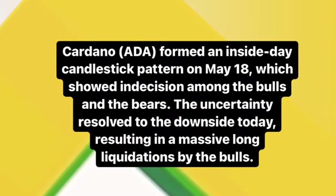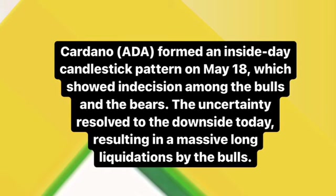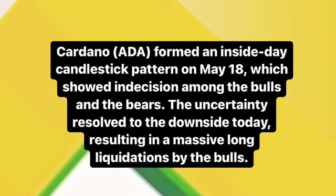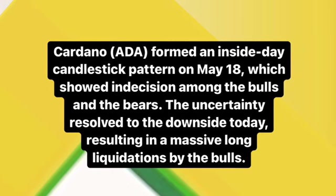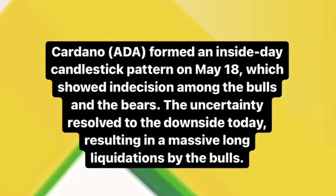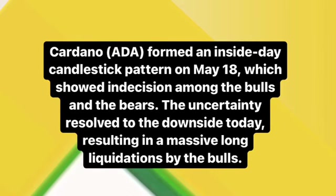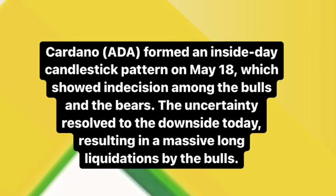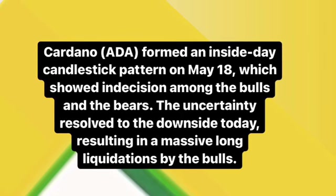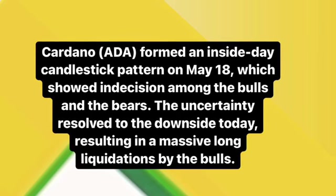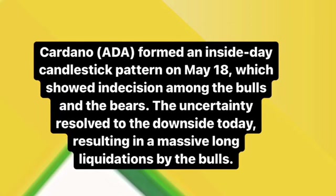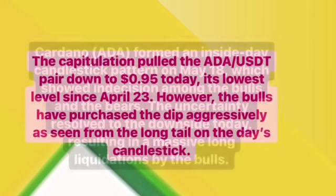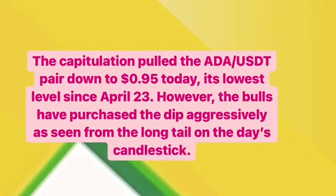I'm going to use the ADA/USDT pair. From an inside day candlestick pattern on May 18th, which showed indecision among the bulls and bears, the uncertainty resolved to the downside today, resulting in a massive long liquidation by the bulls. I'm going to use a combination of moving average, RSI, Stochastic, and Bollinger Bands. The platform I use is TradingView.